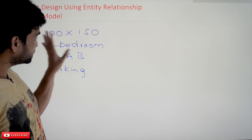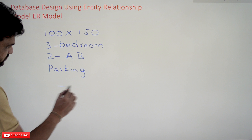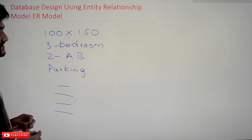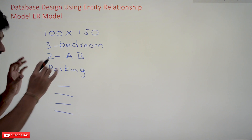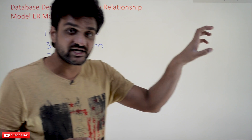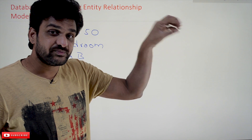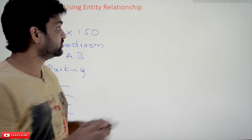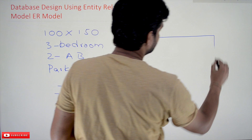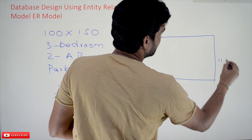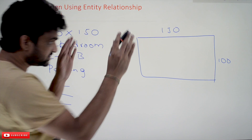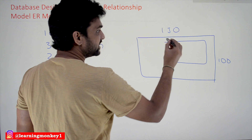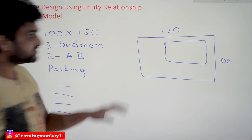After taking all these requirements, what the civil engineer will do is design them. He has a visualization that needs to be put on paper, so he is going to create a plan. He takes 100 feet length and 150 feet width to get the visualization of the site and produce the house plan.